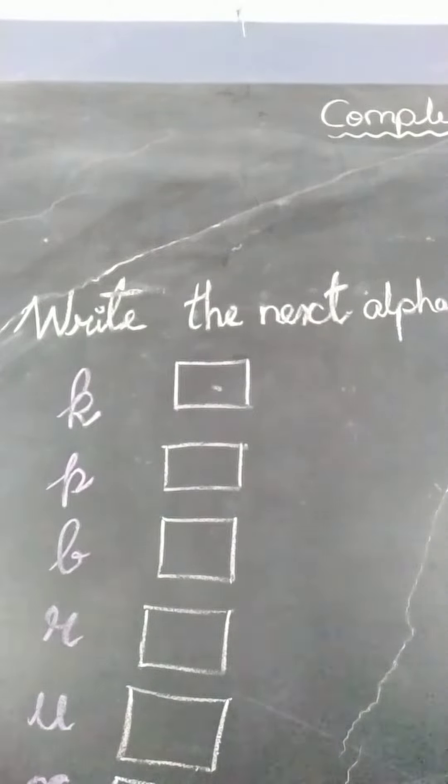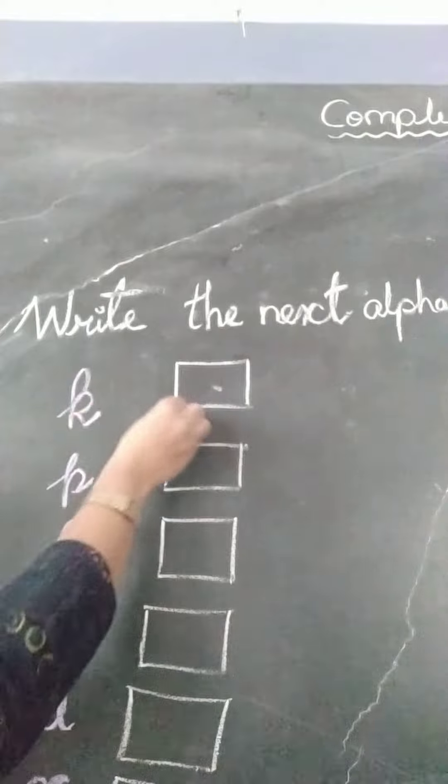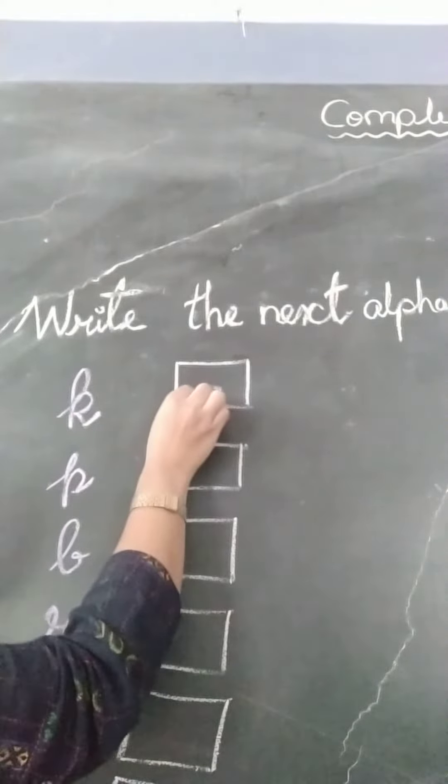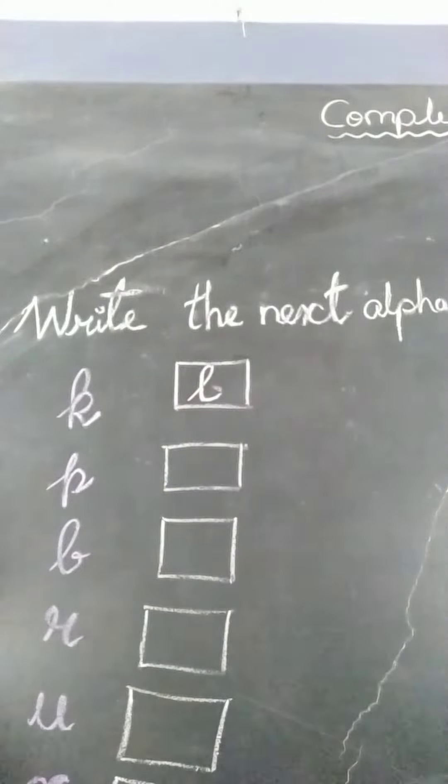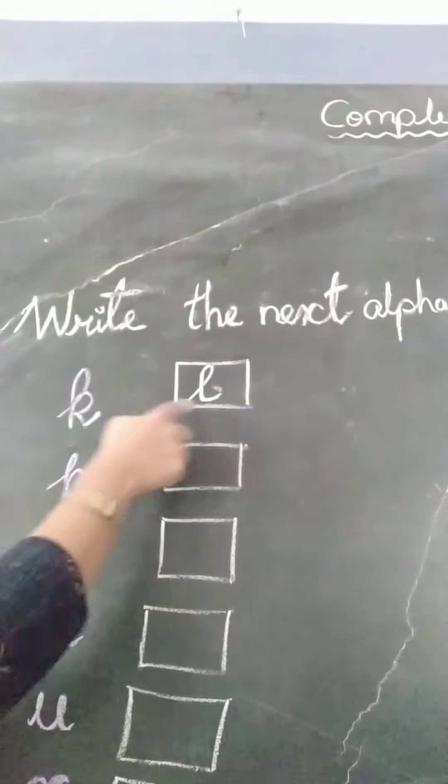So the first cursive alphabet is K. The next, after K comes L. The cursive alphabet L is written like this. After K, L.